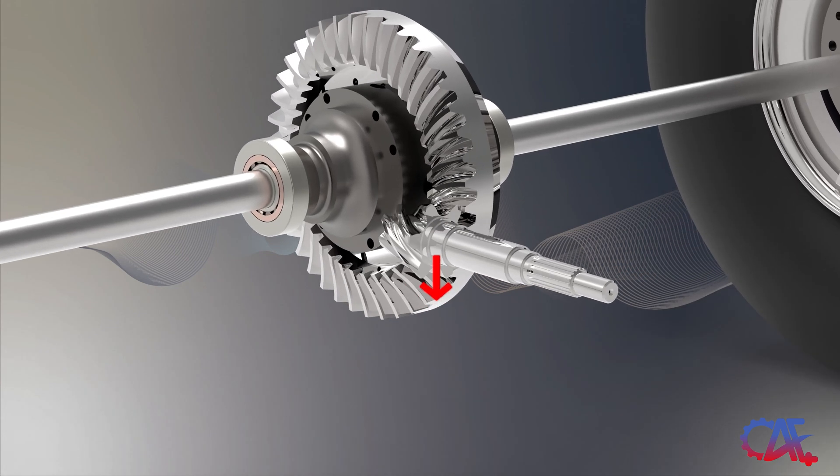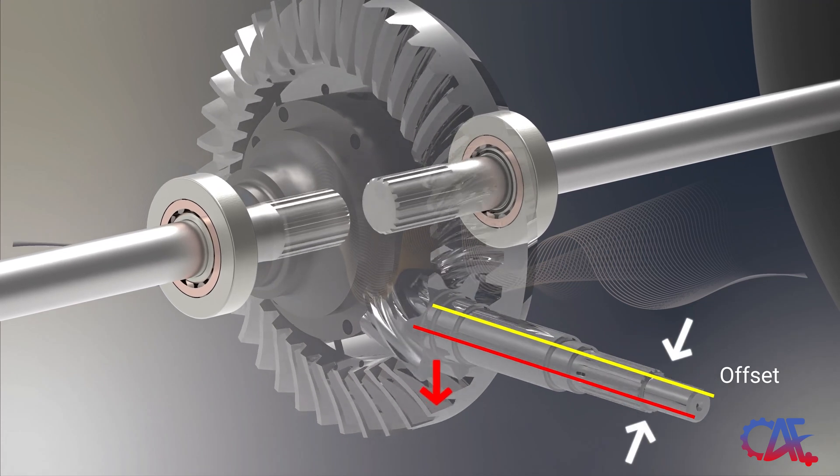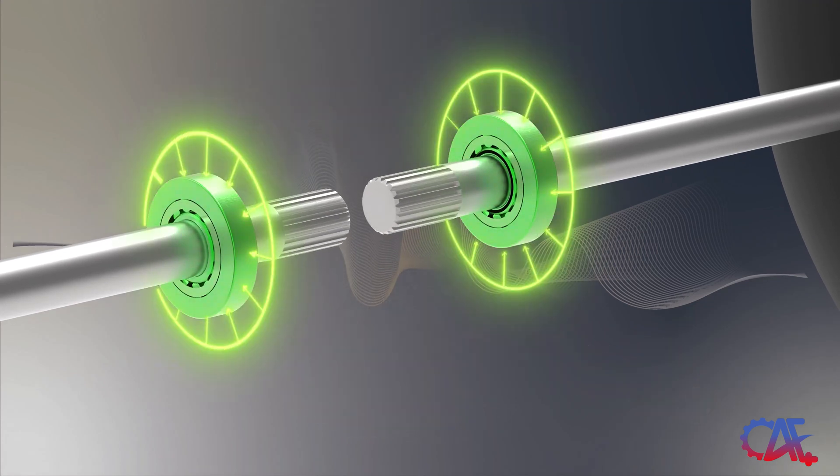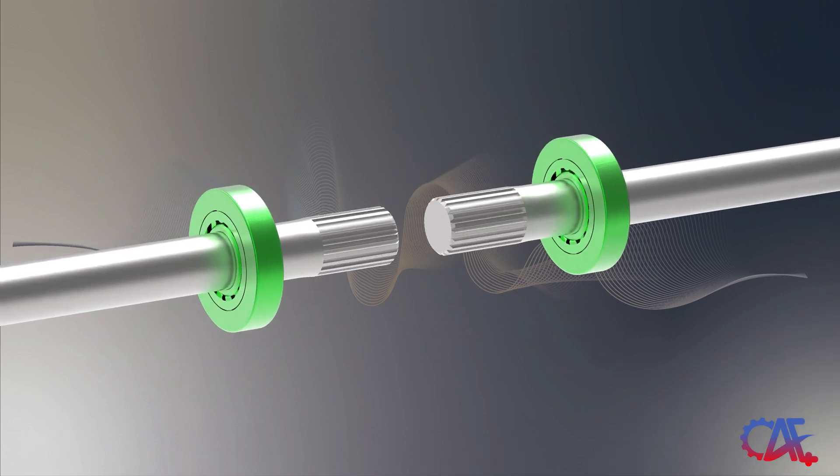As the pinion gear engages the crown wheel, the helical design of the gears, combined with the pinion's off-center position, generates significant downward radial forces. To counter these forces, cylindrical roller bearings are employed to ensure smooth rotation with minimal friction.